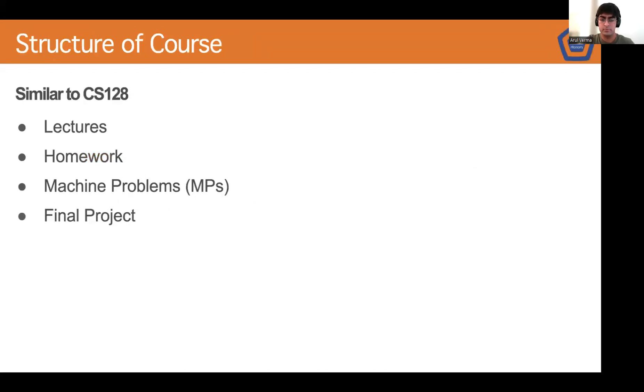So how is this class broken down? Well, it's very similar to CS128. There's four major components of the course. There's the lectures, the homework, the MPs or machine problems, and then finally, there is a final project.